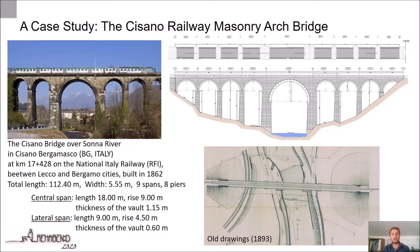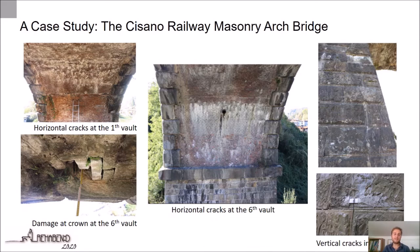The nine arches of the bridge are separated by eight piers and two abutments, and the central arch over the Adda River is larger than the others, being almost twice its length, with a span length of 18 metres and 1.15 metres constant thickness. The structure is suffering several cracks and damage, which are in evolution.